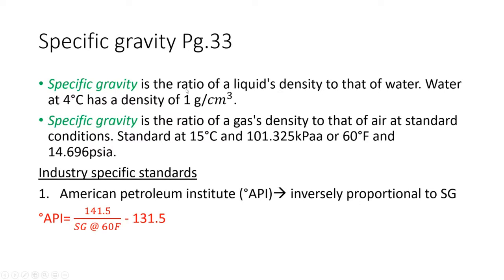Density is commonly related to specific gravity. By definition, specific gravity is the ratio of a liquid's density to that of water at 4°C. At 4°C, water is 1 gram per cubic centimeter — a cubic meter of water is a metric tonne. For gases, specific gravity is relative to air at standard conditions: 15°C and 101.325 kPa. There are also industry-specific standards — for example, the American Petroleum Institute has its own standard which is inversely proportional to specific gravity.